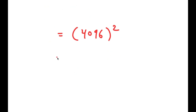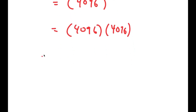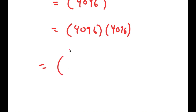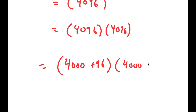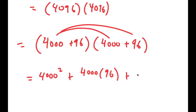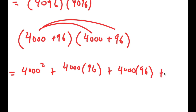Now, 4,096 squared is the same thing as 4,096 times 4,096. What most people would do is just multiply this using the conventional method, but that takes way too long and it's really easy to make an error. So instead, to more easily solve this, I'm going to write this as 4,000 plus 96 times 4,000 plus 96, and use the distributive property.